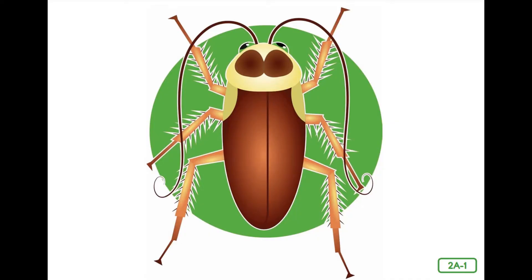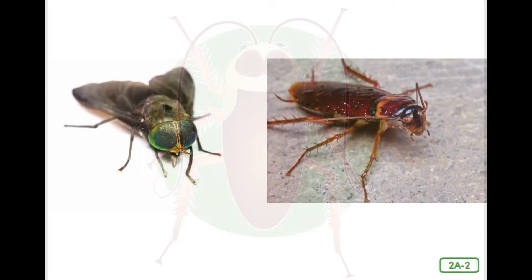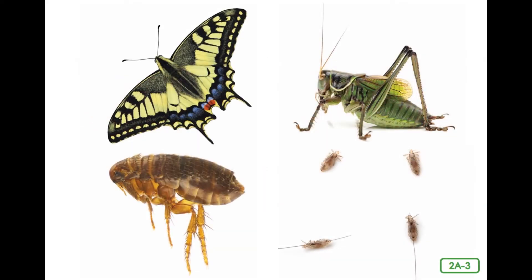Do you think I look anything like a fly? There are millions of insects on Earth. At first glance we may look very different from one another. Some insects like butterflies and grasshoppers have wings, whereas others like fleas and microscopic lice don't. Some eat plants and others eat animals, but all insects have certain features in common. I am here to talk about what makes an insect an insect.